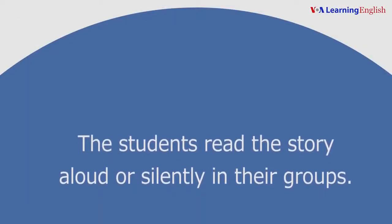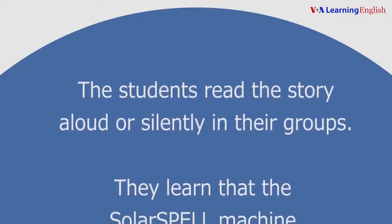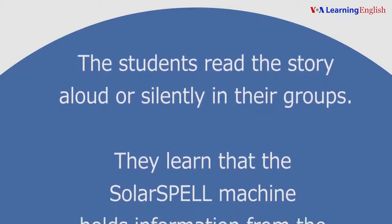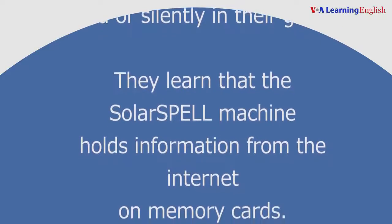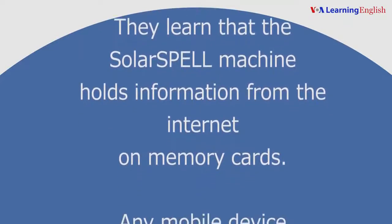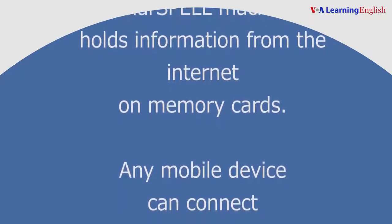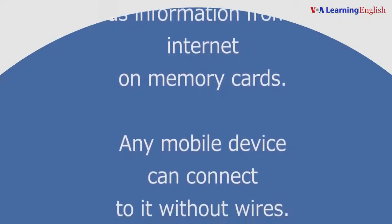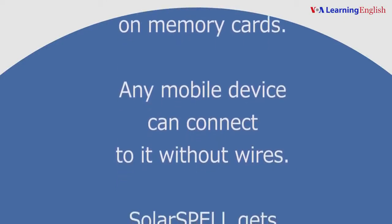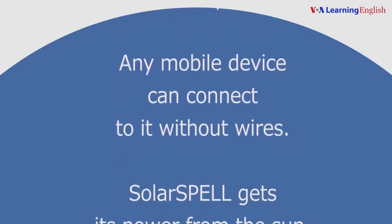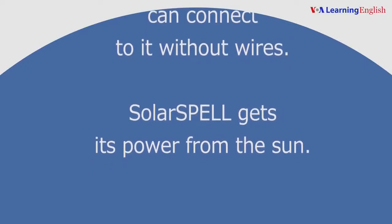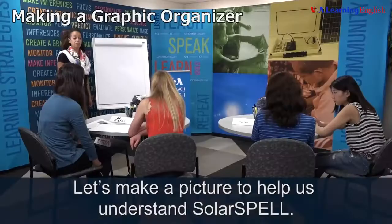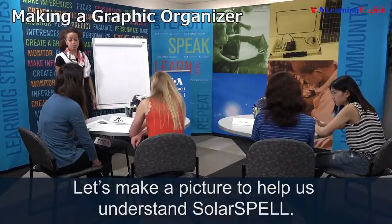The students read the story aloud or silently in their groups. They learn that the SolarSPELL machine holds information from the internet on memory cards. Any mobile device can connect to it without wires. SolarSPELL gets its power from the sun. Let's make a picture to help us understand SolarSPELL.